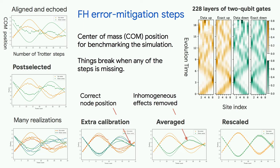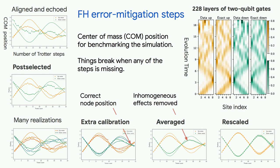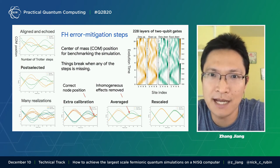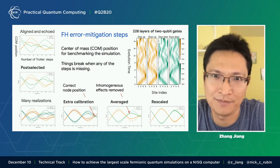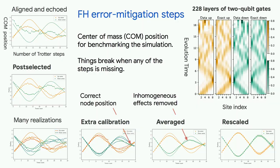To get there, you need many error mitigation steps. Without error mitigation steps, you will get something that is not desirable from our quantum computer. In the first subplot — upper left of the slides — I showed the center of mass position of these wave packets. The solid lines are theoretical simulations, so they're exact. And the dotted lines are the experimental data. They're very, very noisy, although I already used some spin echo here and there.